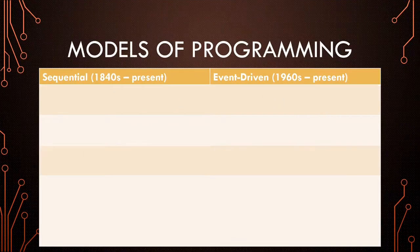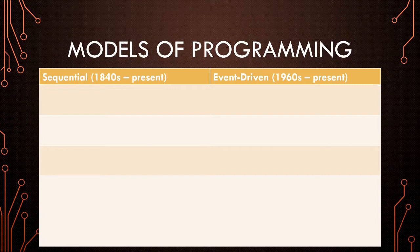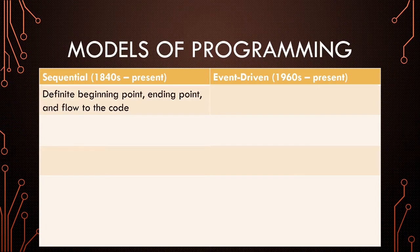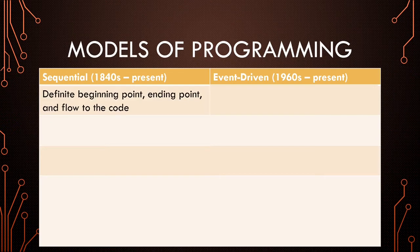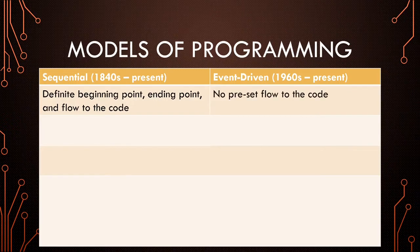Event-driven programming has been around since the 1960s, but other models of programming have been around since the 1840s. Sequential programming is very old and has a definite beginning and ending point and a certain flow to the code that the programmer puts into the code. With event-driven programming, there is no preset flow to the code.